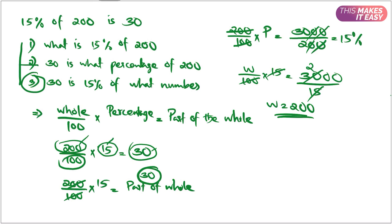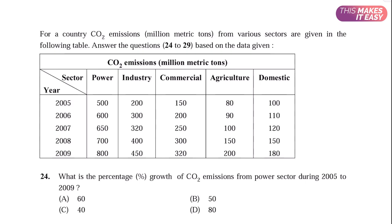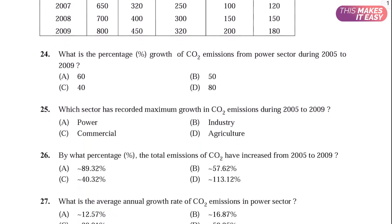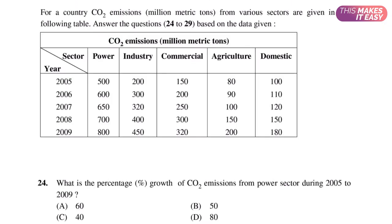Now let's solve some questions related to data interpretation from a previous question paper. A table has been given and there are six questions related to that table. The question says: for a country, CO2 emissions from various sectors are given in the following table — answer questions 24 to 29 based on the data given. There are five different sectors: power, industry, commercial, domestic, and agriculture.